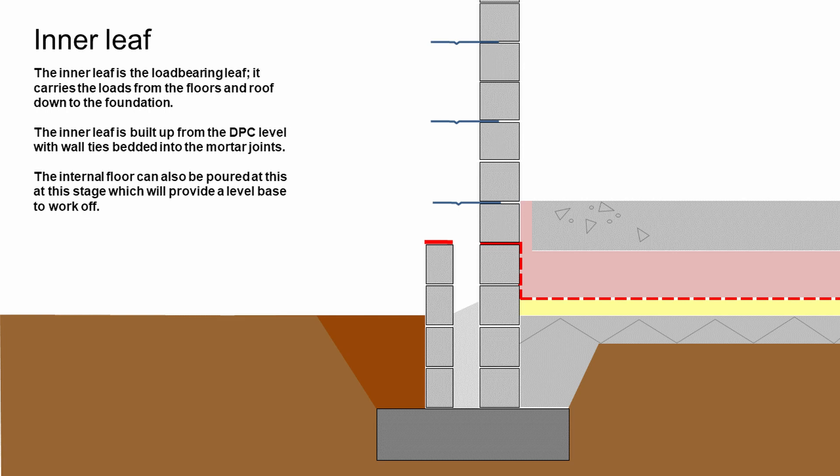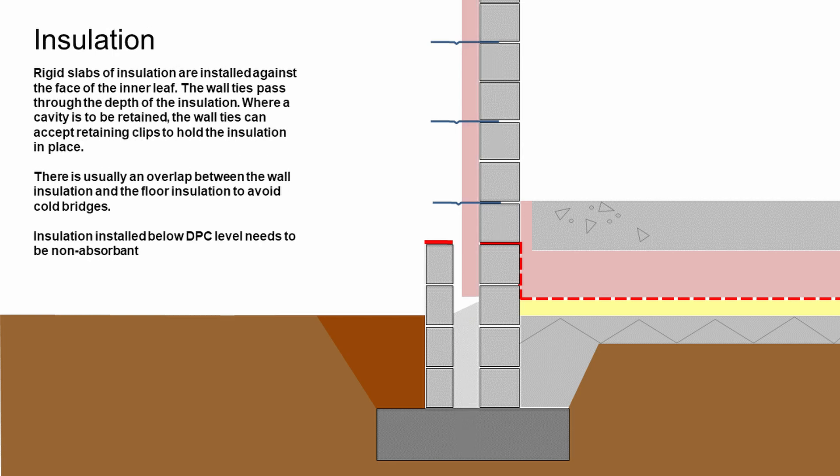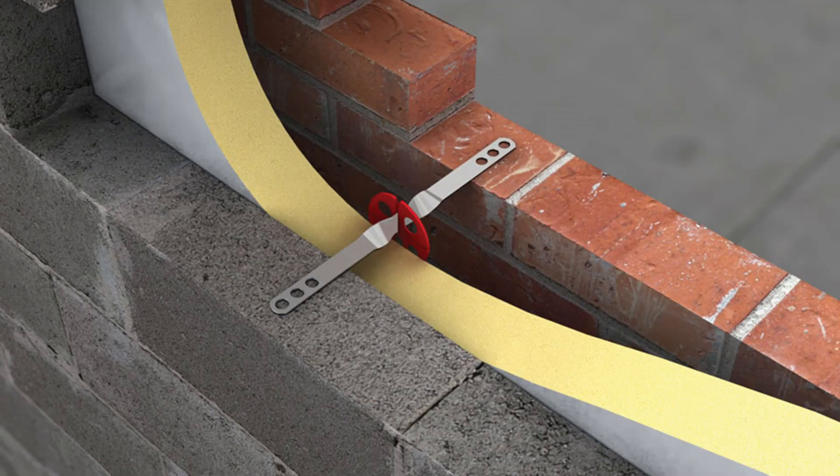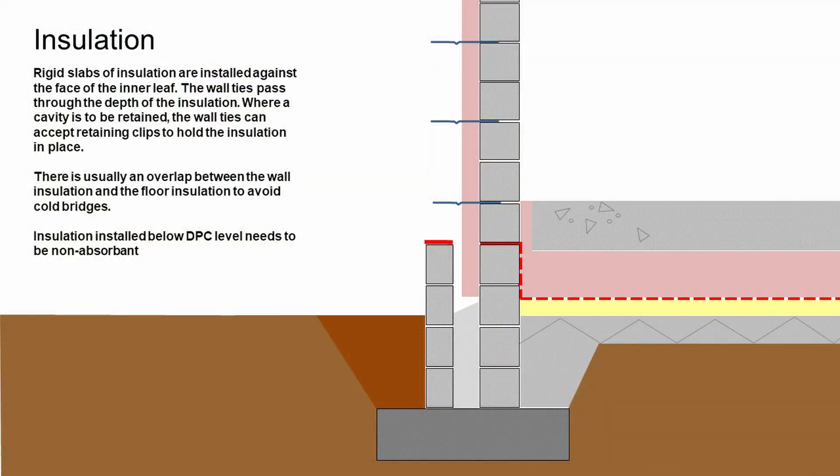The wall ties would be bedded into the mortar joints of the block work and then be ready to take insulation. The insulation is then held against the inside leaf, forming a cavity between itself and the outside leaf. The wall ties pass right the way through that so they can tie the two sides of the wall together. The wall ties would then hold a retaining clip, which would be clipped onto them and hold the insulation back. This is usually a plastic disc, some 75 to 100 millimeters in diameter, and they're made to fit on a number of different types of wall ties depending on what was specified.